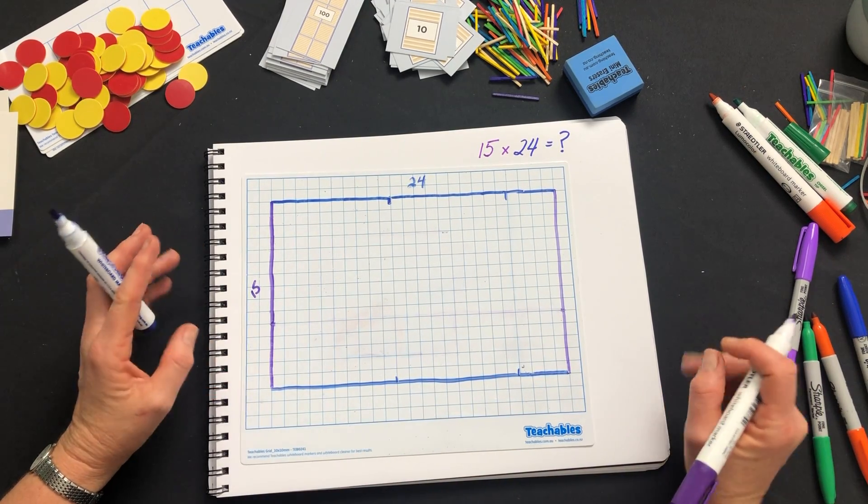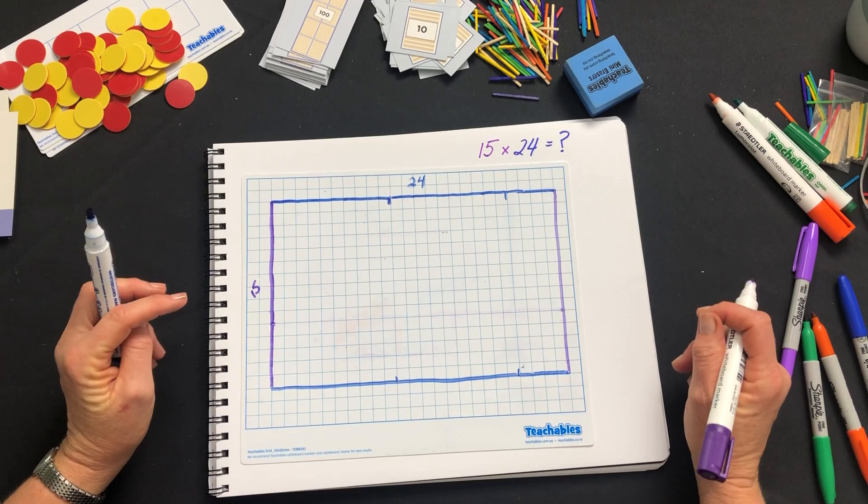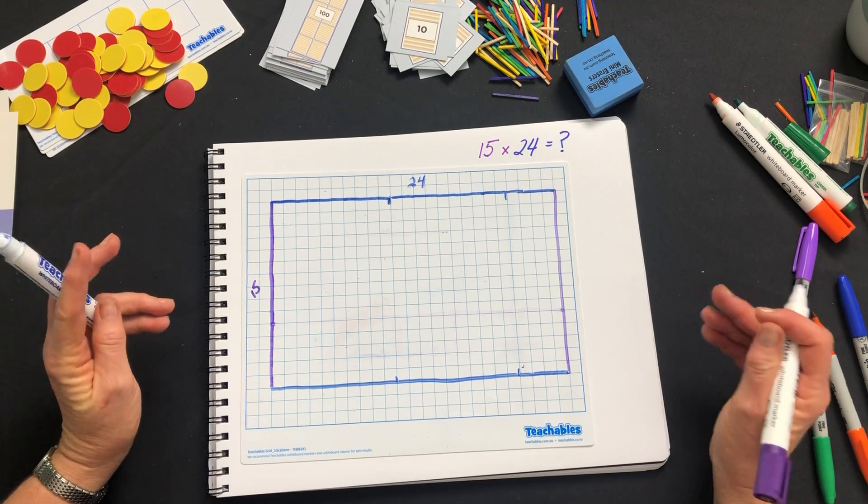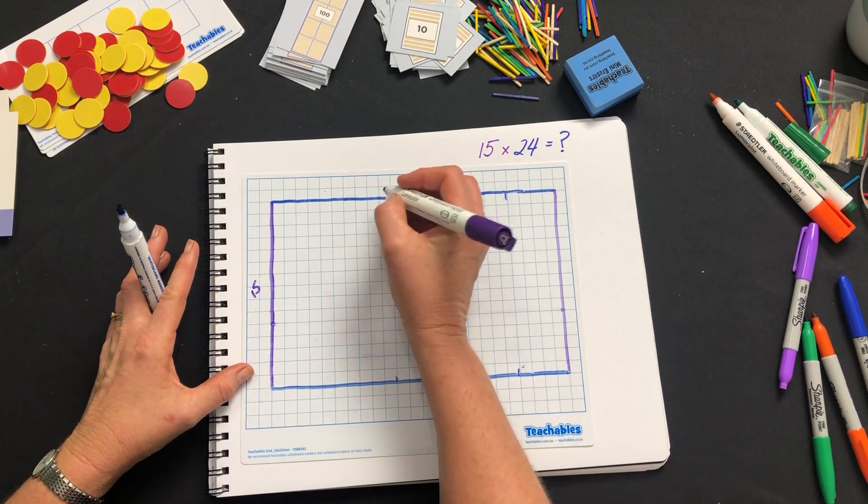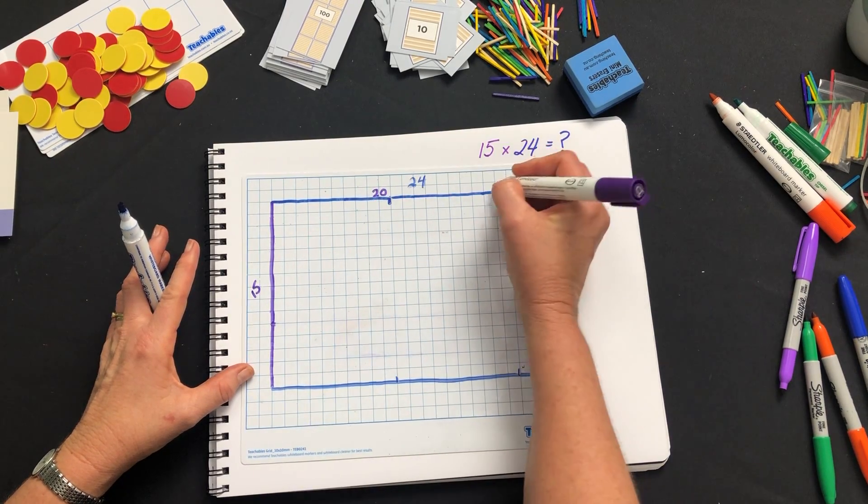Now we can partition both of these numbers so that we end up with four rectangles. 24 is 20 plus 4.